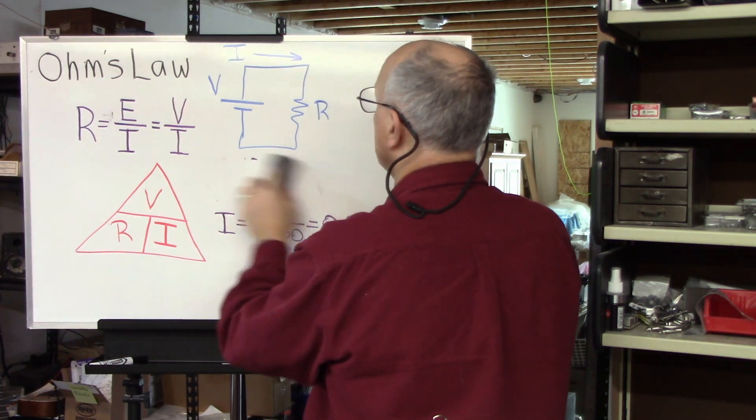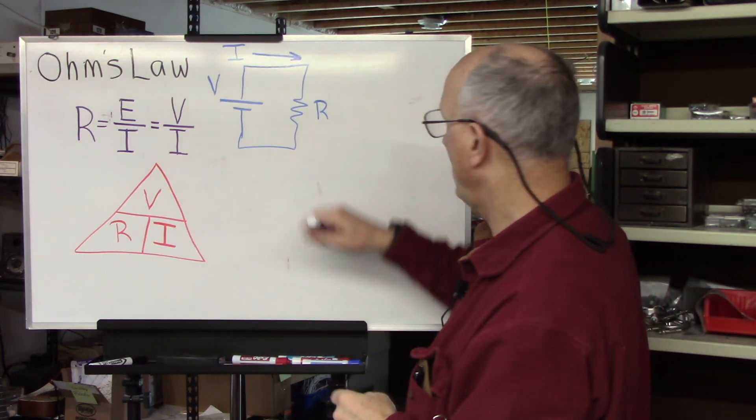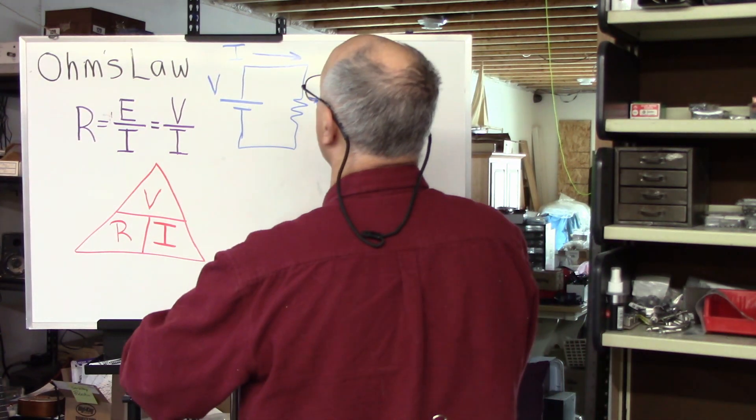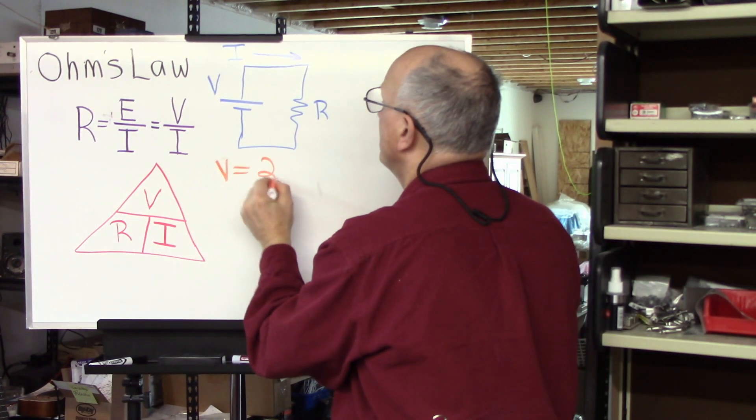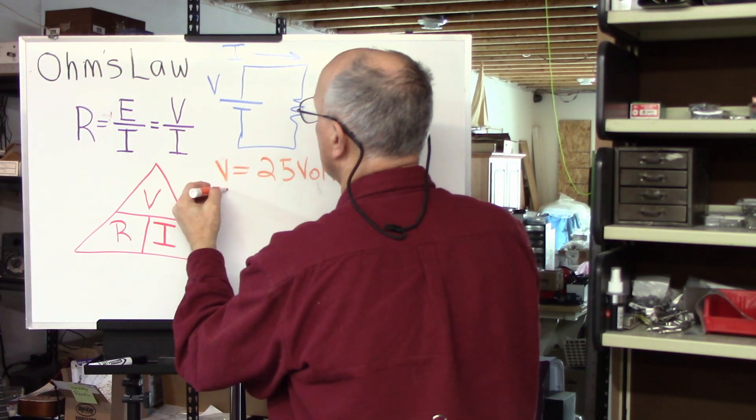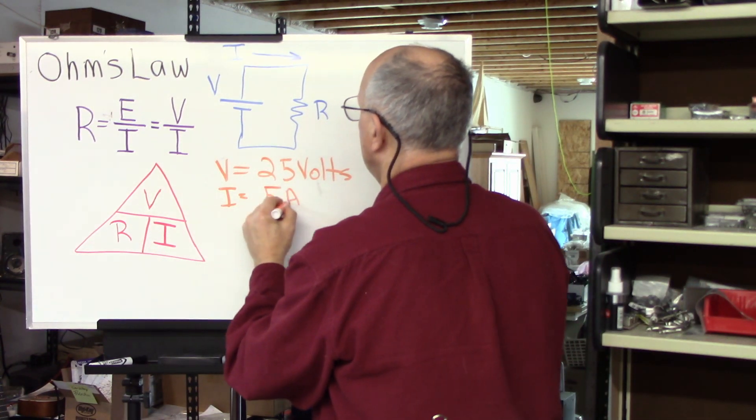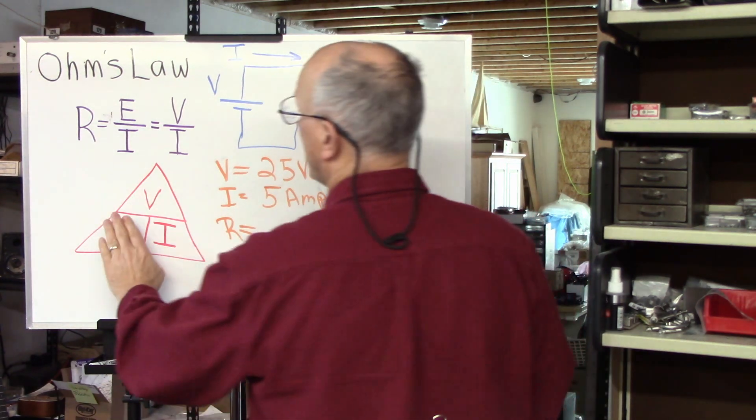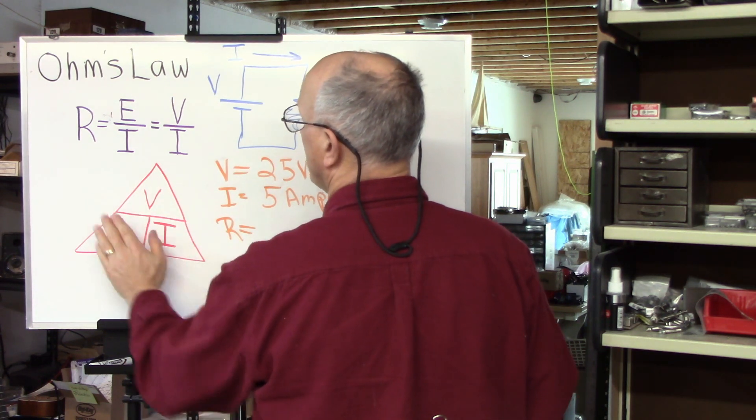All right. Let's try another one. Let's say that we want to find out what the resistance is in this circuit. We know that the voltage is 25 volts. And we know that the current is equal to 5 amps. And we want to find the resistance. We cover up R, and resistance in ohms is equal to voltage in volts divided by current in amps.